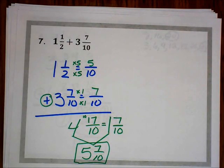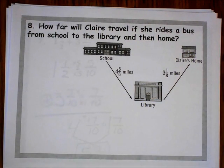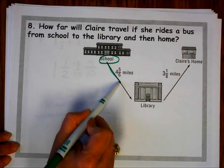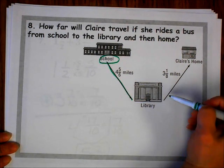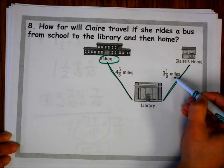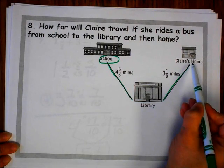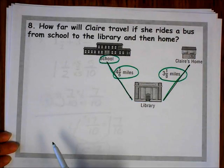2 more questions. Number 8 says: how far will Clara travel if she rides a bus from school to the library and then home? She's starting at school, going to the library which is 4 and 5 sixths miles away. Then from the library she's going home, which is 3 and 1 eighth miles away. So to find the total distance from school to the library to Clara's home, we're going to add 4 and 5 sixths plus 3 and 1 eighth.